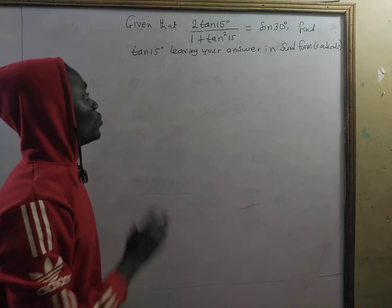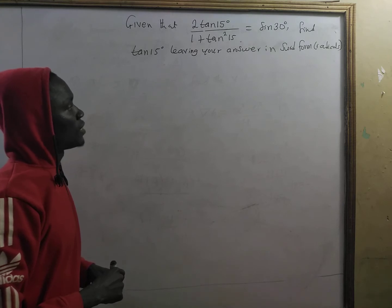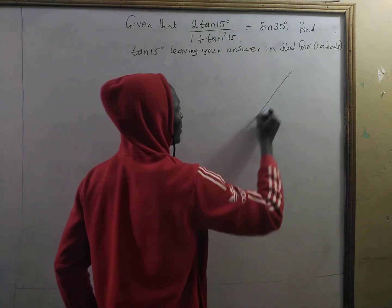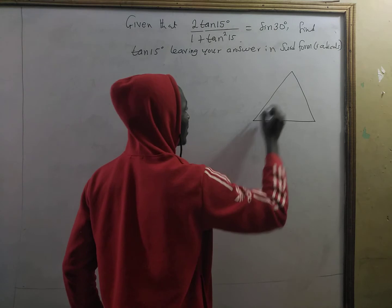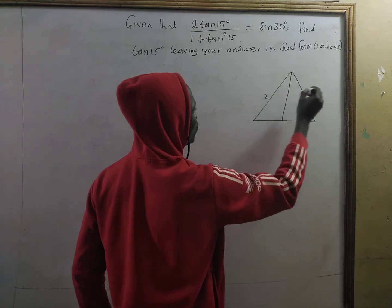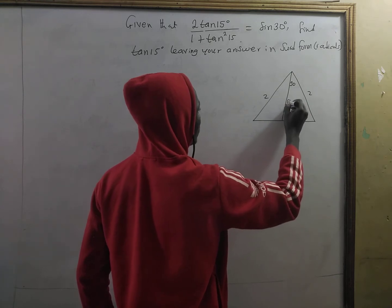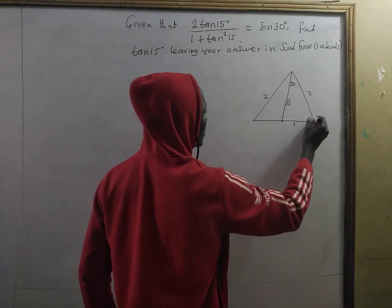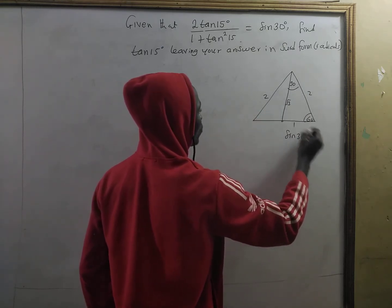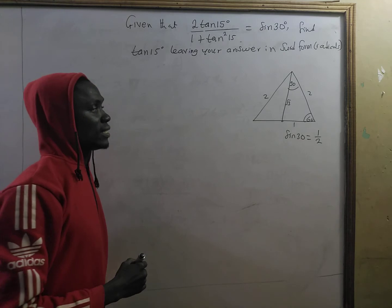We're not going to use a calculator, so this is very simple. We know that 30 degrees is a special angle. Using the two-unit equilateral triangle, we find sine 30. Sine 30 is equal to opposite over hypotenuse, that is one out of two.